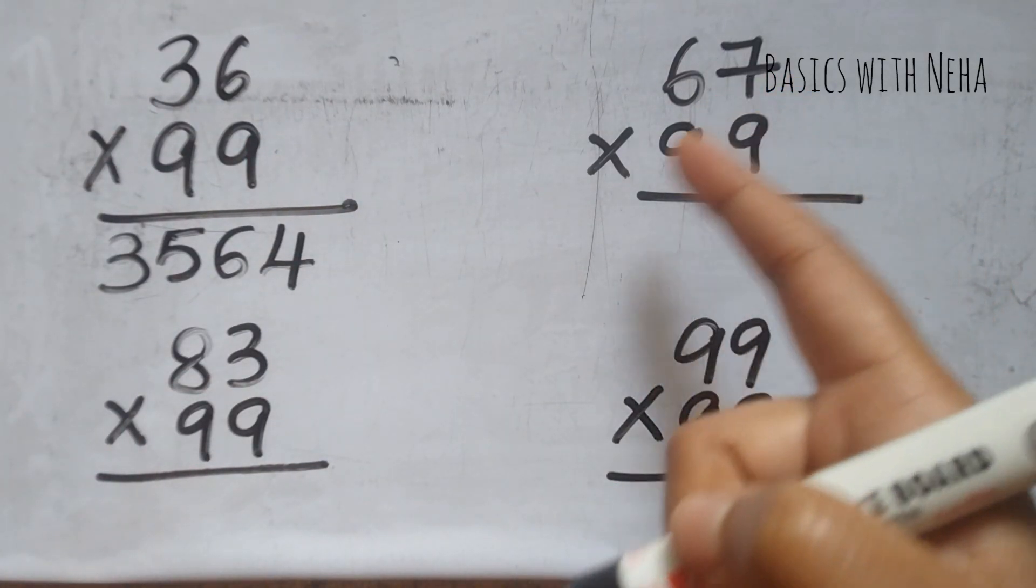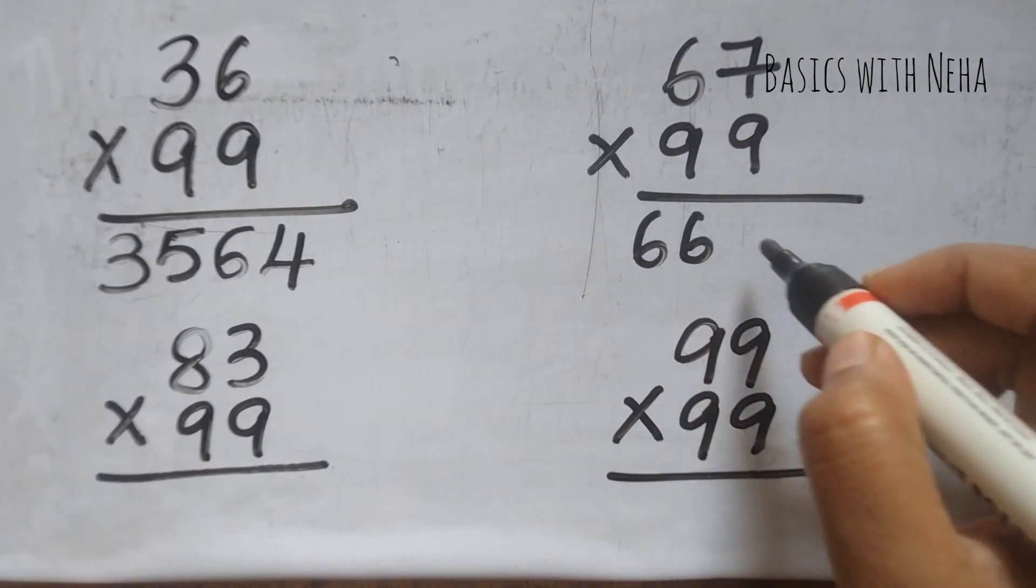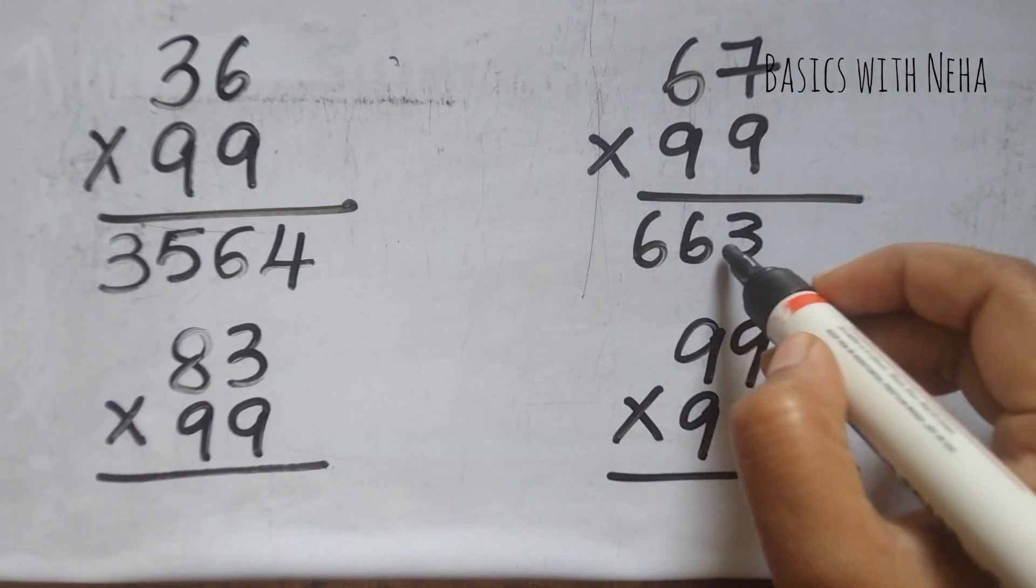Let's try the next one. It is 67 into 99. So it will become 66. And then 9 minus 6 is 3, 9 minus 6 is 3.